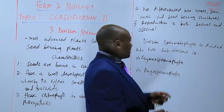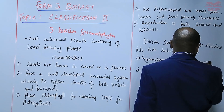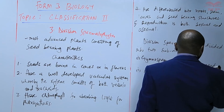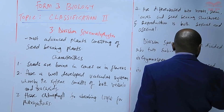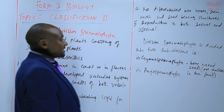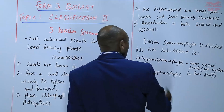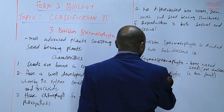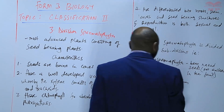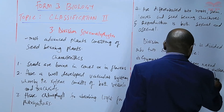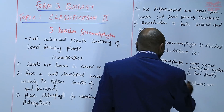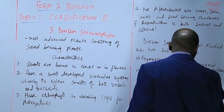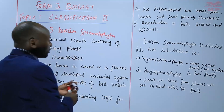The Gymnospermophyta are the ones that bear naked seeds — seeds that are not enclosed in the fruit. For the case of Angiospermophyta, the seeds are borne from flowers and are enclosed within the fruit. We are now going to start with the first subdivision.